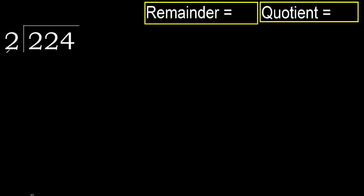224 divided by 2. 2 is not less, therefore with 2. 2 multiplied by which number is nearest to 2 but not greater?